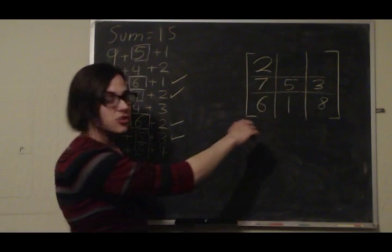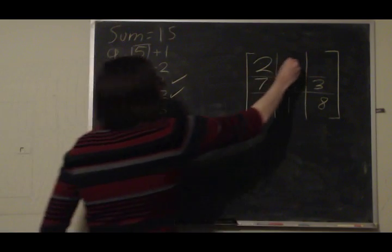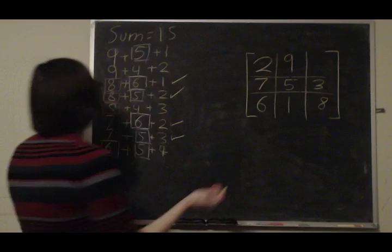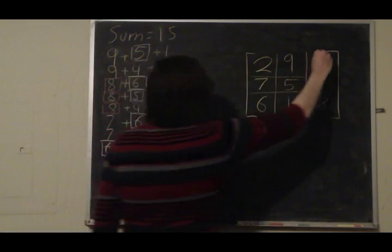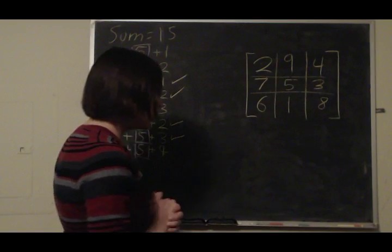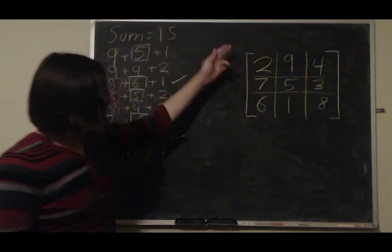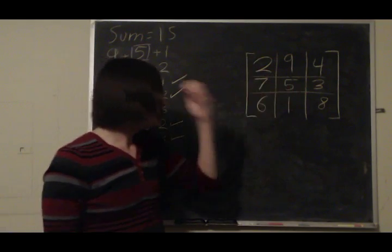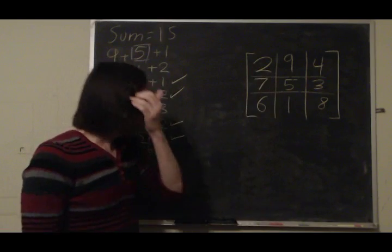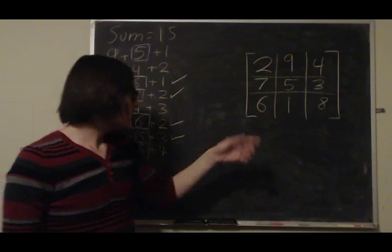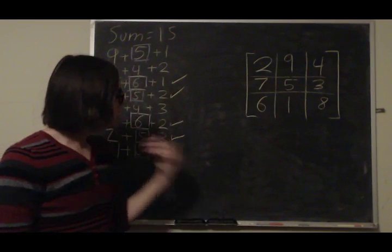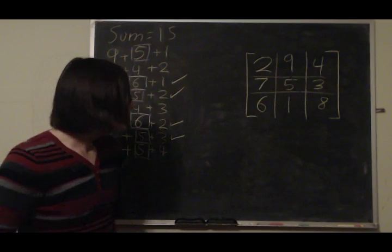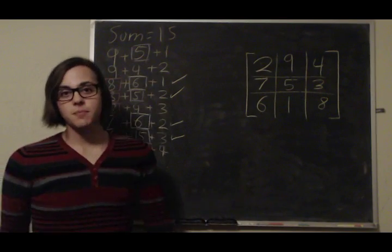So let's do a quick check and make sure that we didn't make a mistake. This is nine plus six, that's fifteen. This is going to be fourteen, fifteen. This is going to be eleven, fifteen. Rows: eleven, fifteen. And this is going to be eight and seven, fifteen, nine and six, that is fifteen. And then diagonals. Eight, five, thirteen, fifteen. Nine, fifteen. So this is our solution. We are done.